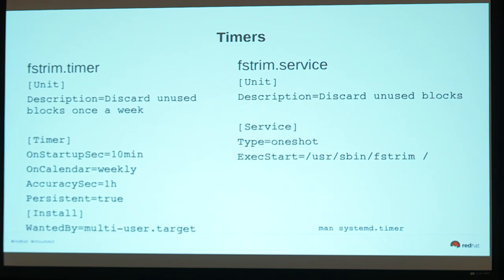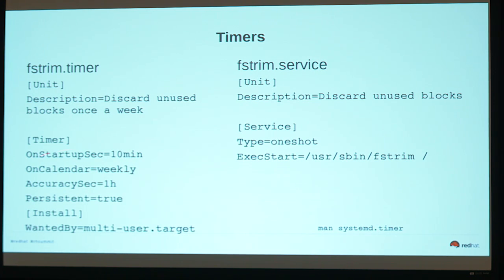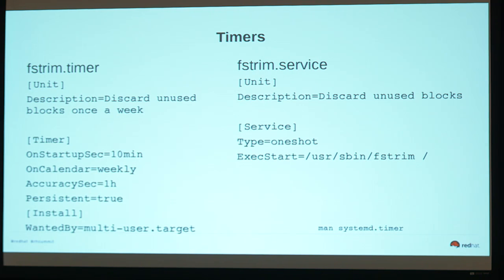Timers are the native cron-type functionality in systemd. These are simple examples from the fstrim stuff in Fedora. You can get really fine-grained detail, especially on startup — if you want something to run at a particular interval, there are several options. I like 'Persistent=true' — if you shut down a system for a while, it's aware of its schedule because it writes it to disk. And of course, it will run the associated service when the timer fires.